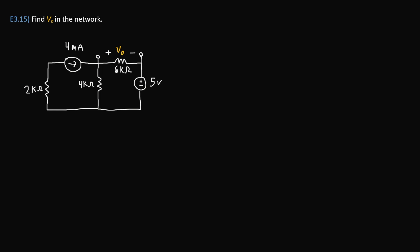So in this problem, we're trying to find V₀ in the following network. In this case, V₀ is the voltage drop across a 6 kilo ohm resistor, as seen in the diagram.